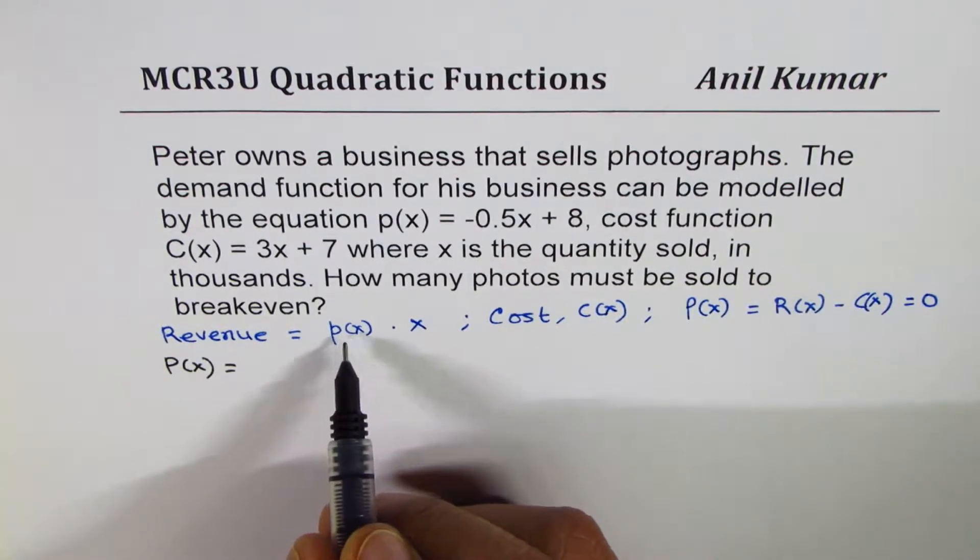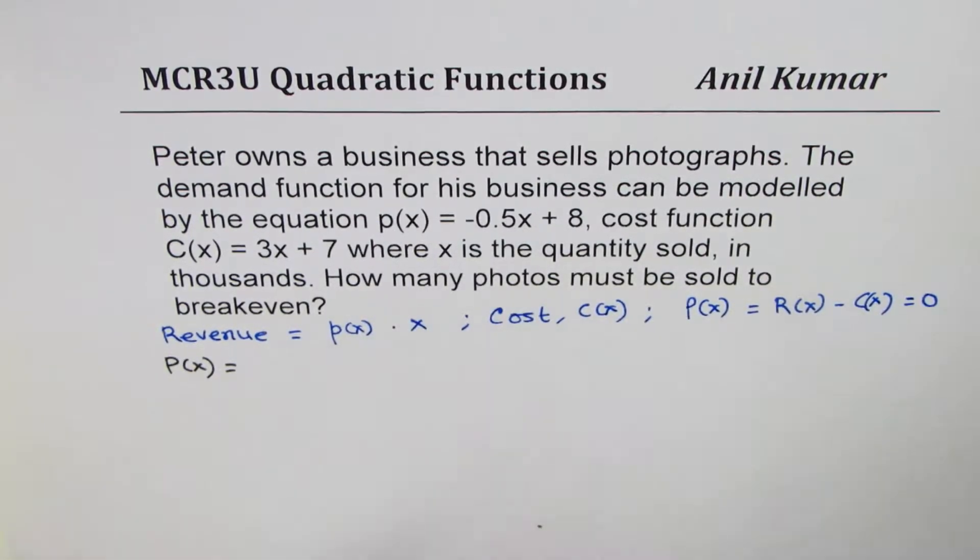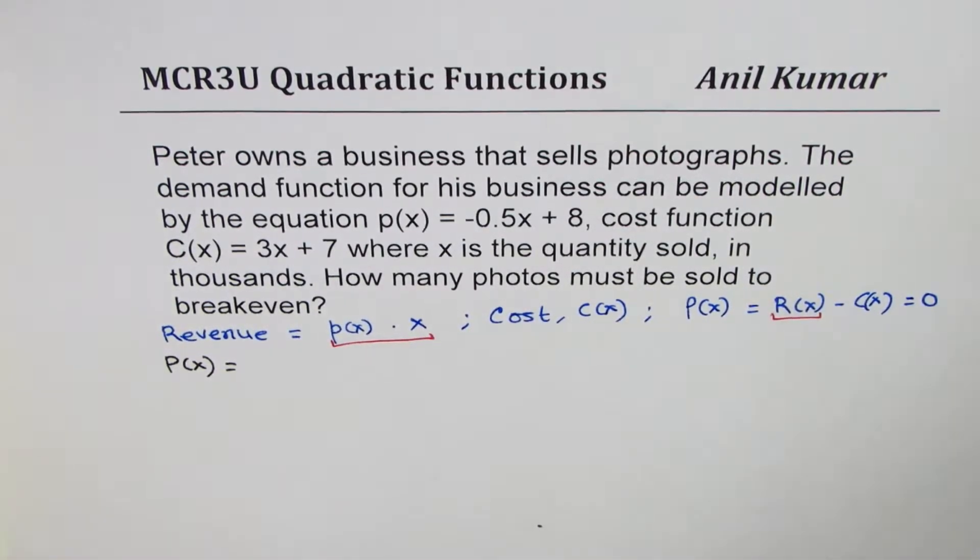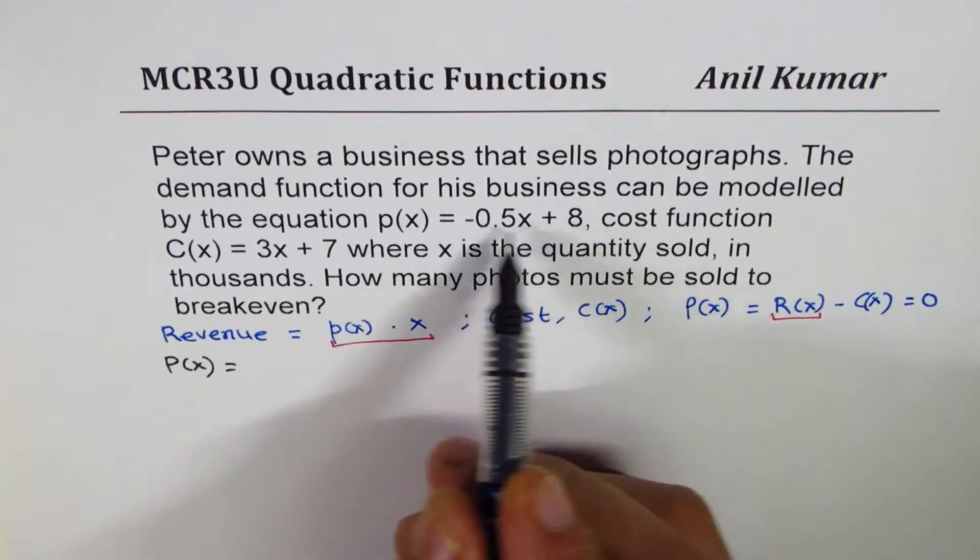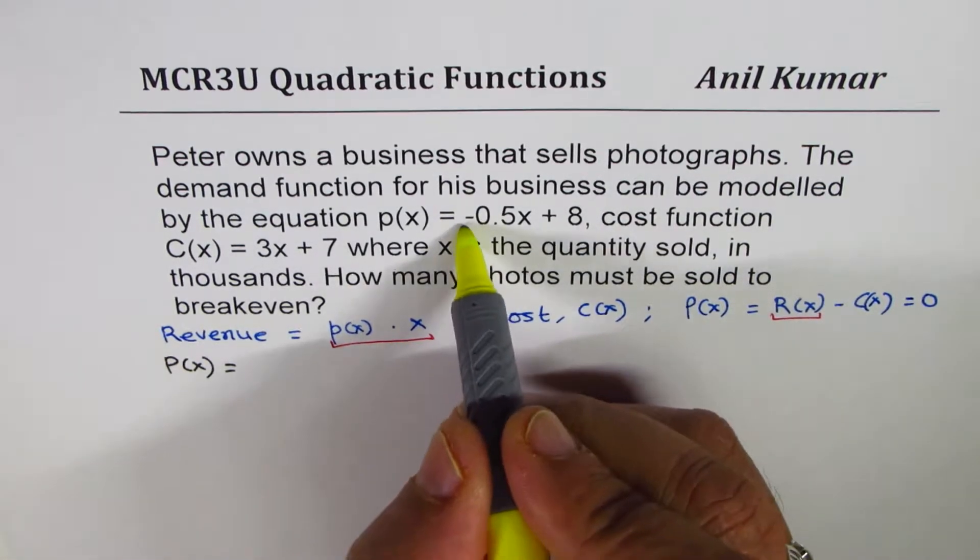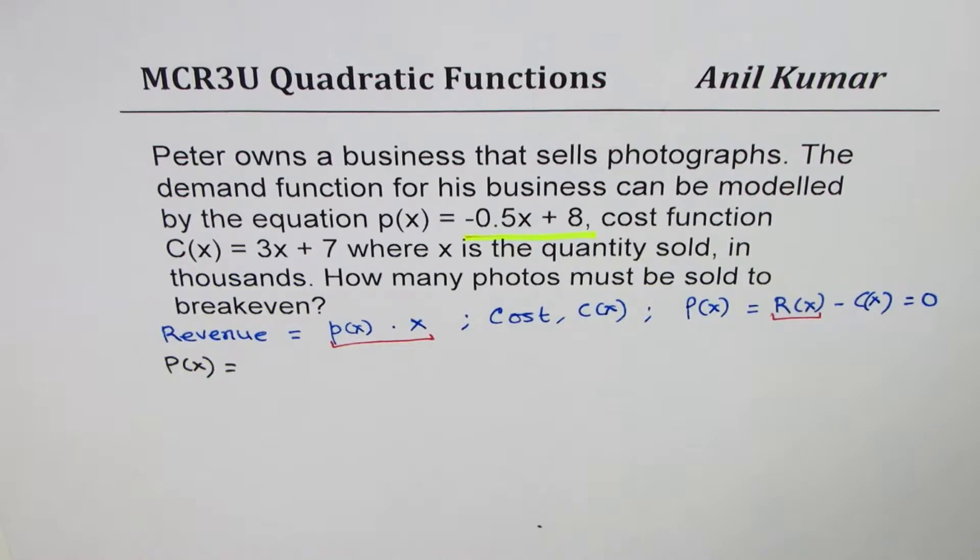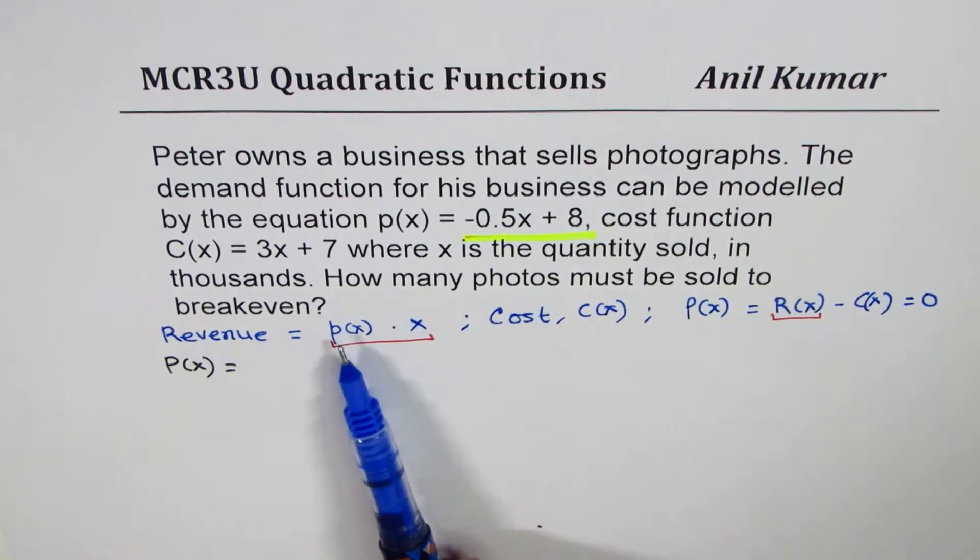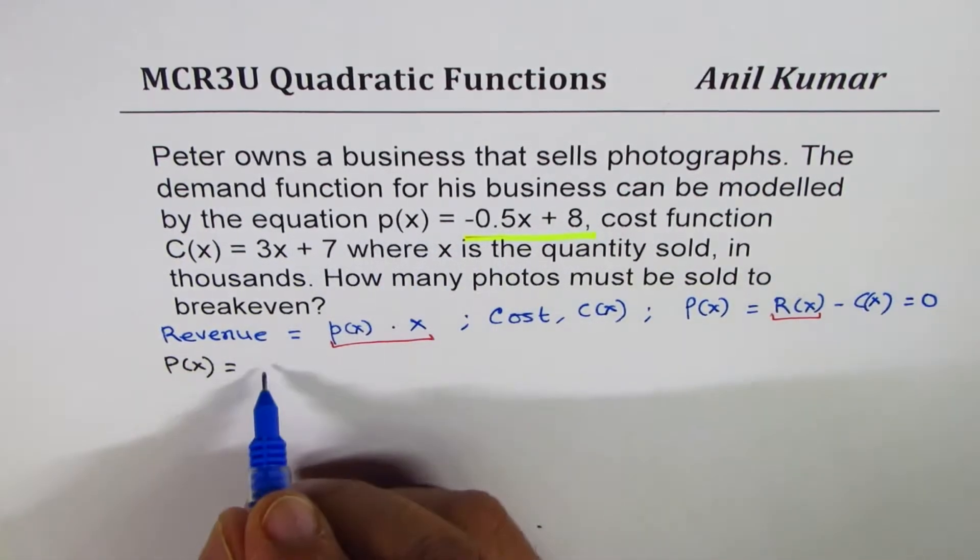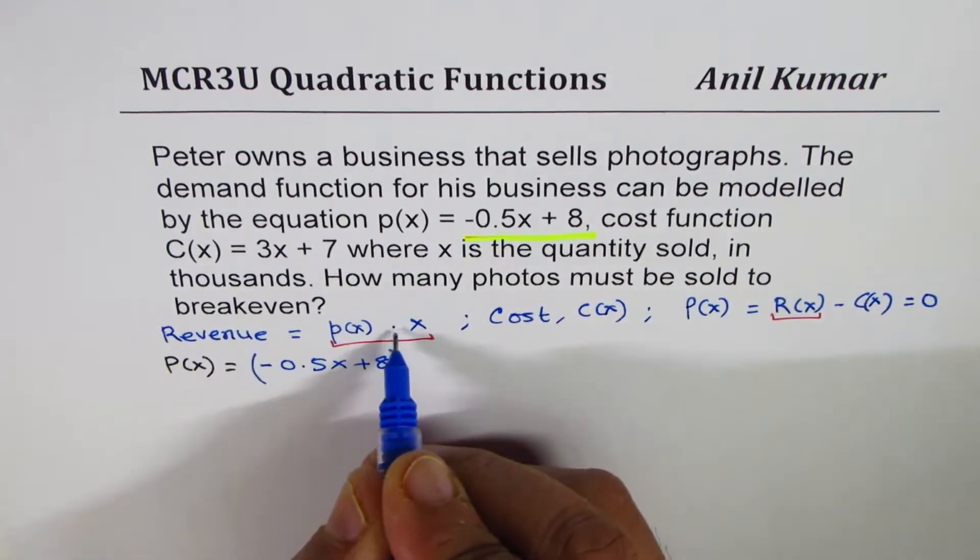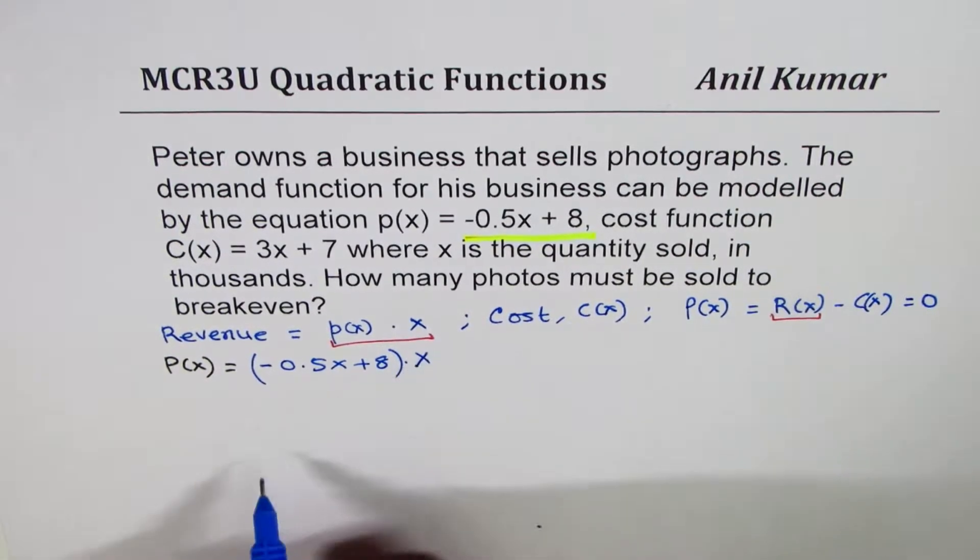What is revenue? Revenue is demand function times x. So we will begin with writing revenue as profit times x. Profit is given to us as this function. So let me highlight this. So we are now writing profit, I mean sorry, the demand function. Profit as difference of revenue and cost, where revenue is product of demand function and items sold. So demand function is minus 0.5x plus 8. Times x. So we will multiply this by times x.